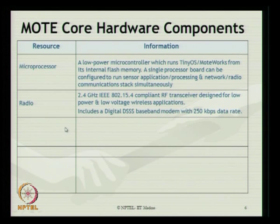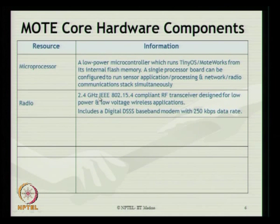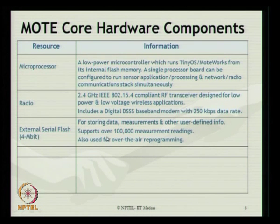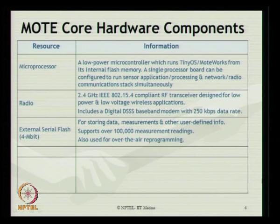The mote also has a radio operating at 2.4 GHz IEEE 802.15.4, a compliant RF transceiver designed for low power and low voltage wireless applications. It includes a digital DSSS baseband modem with 250 kbps data rate attached to the radio. The external serial flash is about 4 Mbit for storing data and measurements and other user-defined information required from the data acquisition system. It supports over 100,000 measurement readings, so it can be continuously monitored and also used for over-the-air reprogramming.